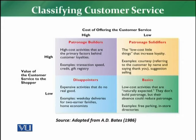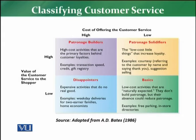The fourth grid contains the basics, where the cost of offering our customer services is low and the value to the customer is also low. So these are the four types of customer services: high cost and high benefit; high cost and low benefit; low cost and high benefit; and low cost and low benefit.